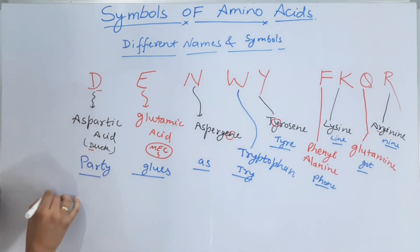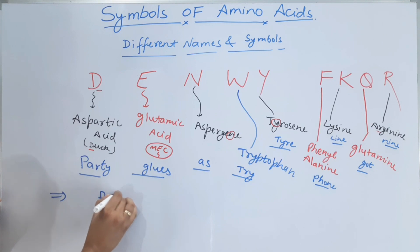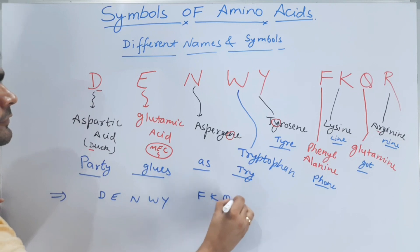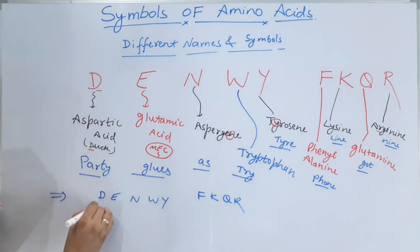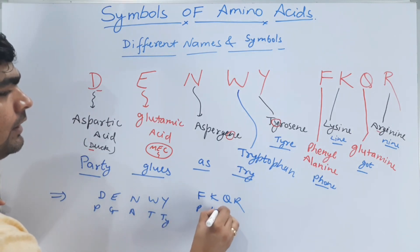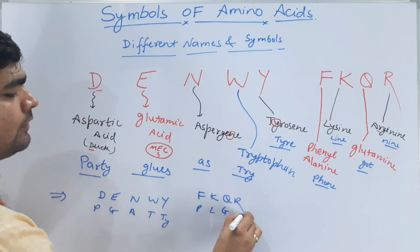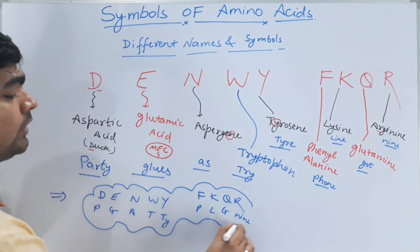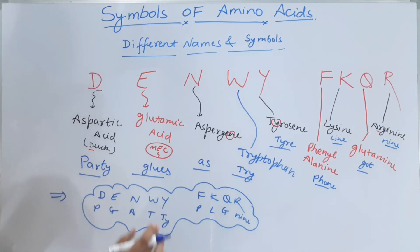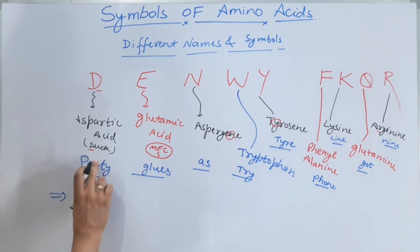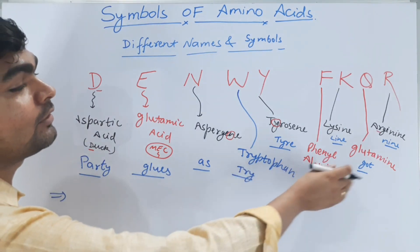Let me write it out for you all: Denvi Fakir — party glues — as tri-tier — phone line — got nine. This was the very simple trick to remember all the different names of the amino acids with their symbols. I hope you'll like it. Friends, if you find 'party glues as tri-tier, phone line got nine' difficult, I've got another one for you.